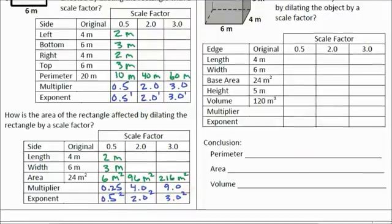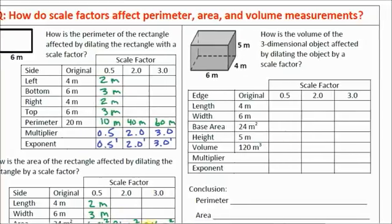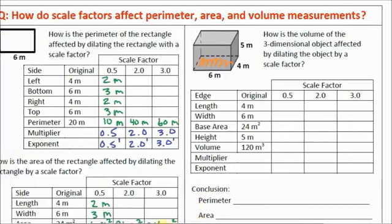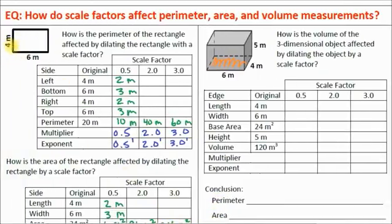How does that work with volume? Let's look at how the volume of a three-dimensional shape is affected by dilating it by a scale factor. This is a rectangular prism. I use the same base as before — a 4 by 6 rectangle, shown here in orange.